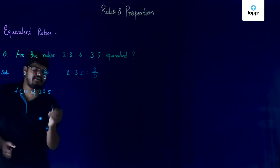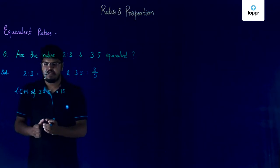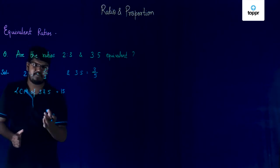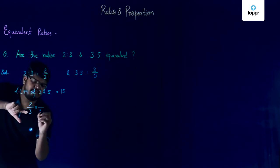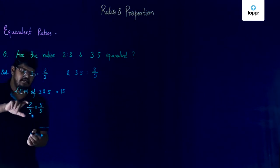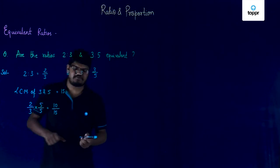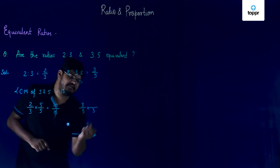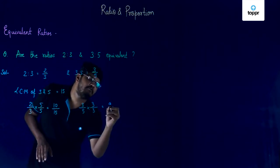The LCM of 3 and 5 is equal to 15 because there is no factor common in them. Since the LCM is 15, we'll try to make each of these ratios' denominator as 15. To convert the denominator 3 into 15, we multiply by 5 in both numerator and denominator. So, 2 by 3 into 5 by 5 will give us 10 by 15. Similarly, to make the denominator 5 as 15, we multiply by 3, and so 3 by 5 into 3 by 3 will equal 9 by 15.